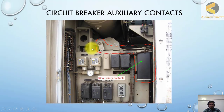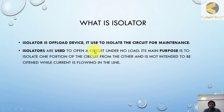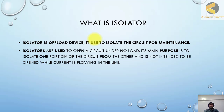Now we move to our next topic: the isolator — another very important equipment used for switching. An isolator is an off-load device used to isolate the circuit for maintenance purposes. Isolators are used to open a circuit under no-load condition. Their main purpose is to isolate one portion of the circuit from another, and they are not intended to be opened while current is flowing in the circuit.